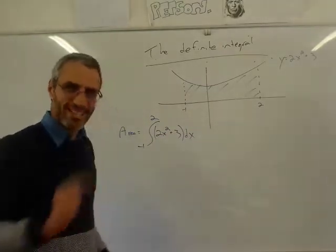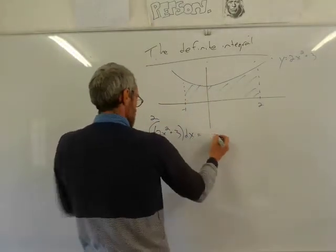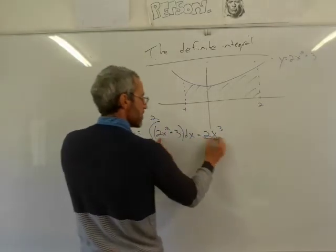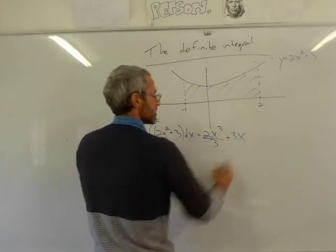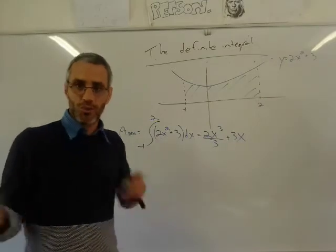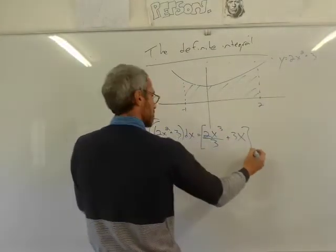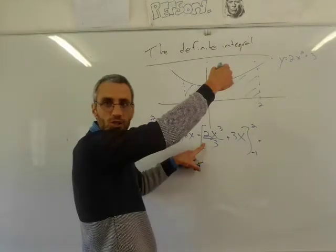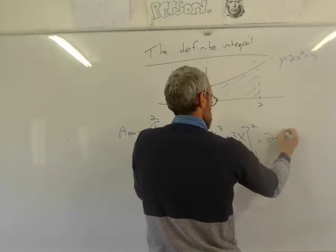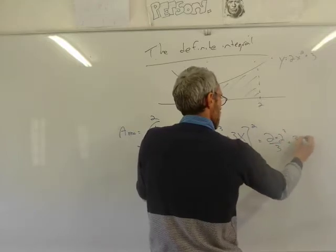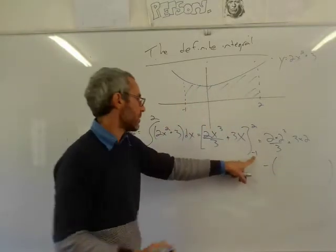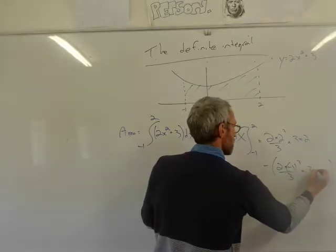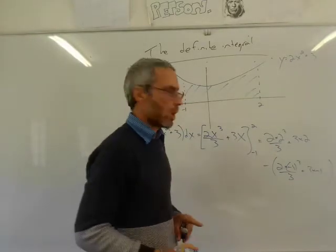That's going to be 2x³ divided by 3 plus 3x. I don't need the constant because it cancels out anyway. I just put the values of x: minus 1 and 2. Starting with the upper limit: 2 times 2 cubed divided by 3, plus 3 times 2, minus — and the lower limit: 2 times minus 1 cubed divided by 3, plus 3 times minus 1. Remember to put brackets, otherwise you'll get wrong answers.